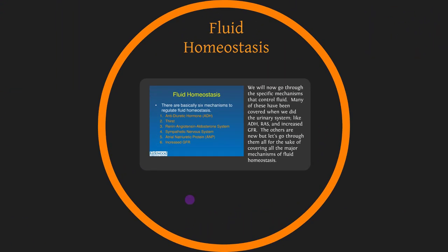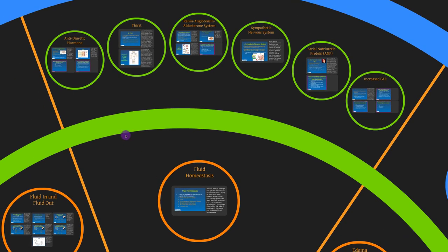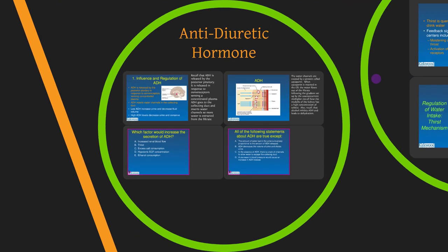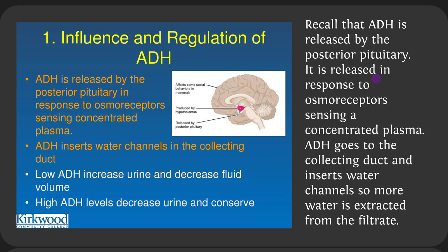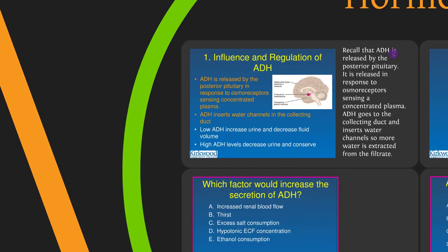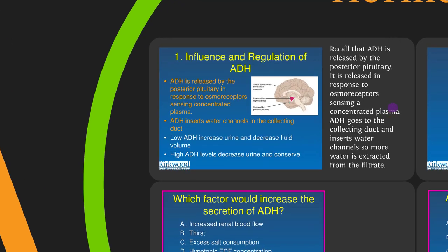We'll now go through the specific mechanisms that control fluid. Many of these have been covered when we studied the urinary system — ADH, the renin-angiotensin system (RAS), and increased GFR. We'll go through ADH, thirst, RAS, sympathetic, ANP, and increased GFR. ADH is released by the posterior pituitary in response to concentrated plasma. ADH travels to the collecting duct and inserts aquaporins — water channels — which increases water absorption from the filtrate.